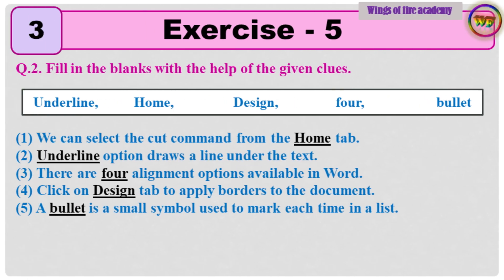Question 2: Fill in the blanks with the help of the given clues. 1: We can select the cut command from the Home tab. 2: Underline option draws a line under the text. 3: There are 4 alignment options available in Word. 4: Click on Design tab to apply borders to the document. 5: A bullet is a small symbol used to mark each item in a list.